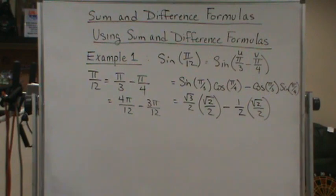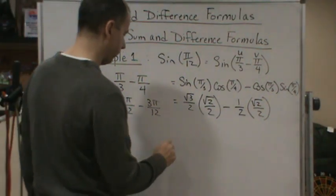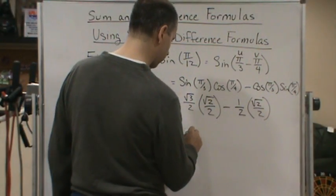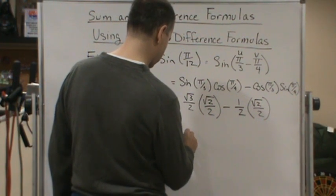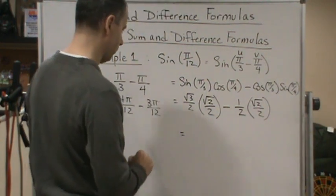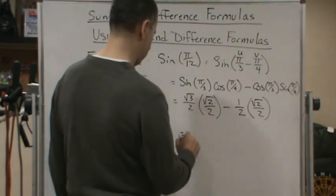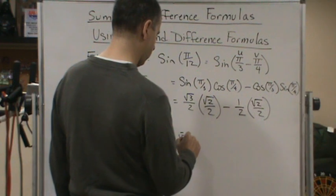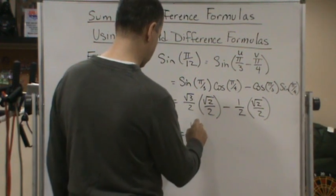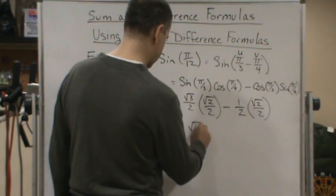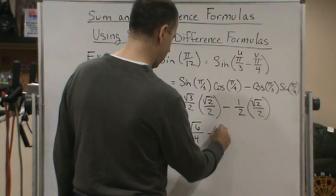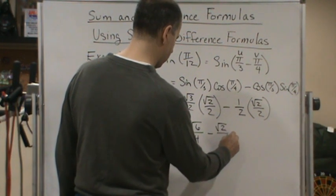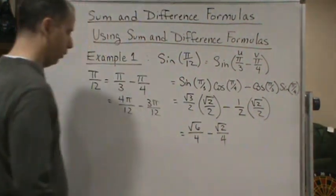And so now, we simplify. Square root of 6 over 4 minus the square root of 2 over 4.